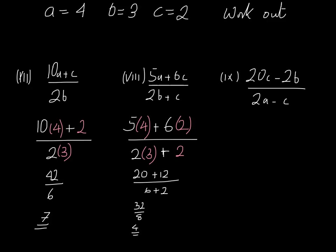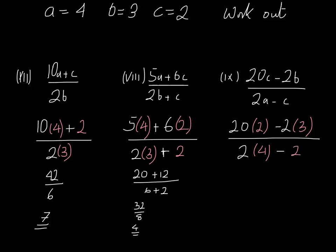Last example: 20C subtract 2B all divided by 2A subtract C. So that's 20 multiplied by 2 subtract 2 multiplied by B which is 3, all divided by 2 multiplied by 4 subtract 2. Let's work out the top: 20 times 2 is 40, take away 6, all divided by 8 take away 2, which gives us 34 divided by 6. I've left this last one as a tricky one — this isn't actually a whole number. You can simplify that fraction by dividing the top and bottom by 2 to get 17 divided by 3, and if you wanted to convert that into a mixed number, that would be 5 and 2 thirds. Leaving your answer as a simplified fraction is absolutely fine.